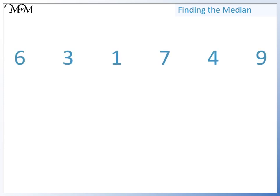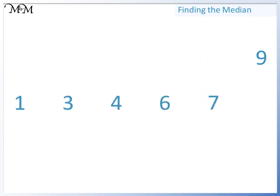To find the median of this set of values, we begin by putting the numbers in order. To find the middle number, we cross out the numbers on each side until we reach the middle.